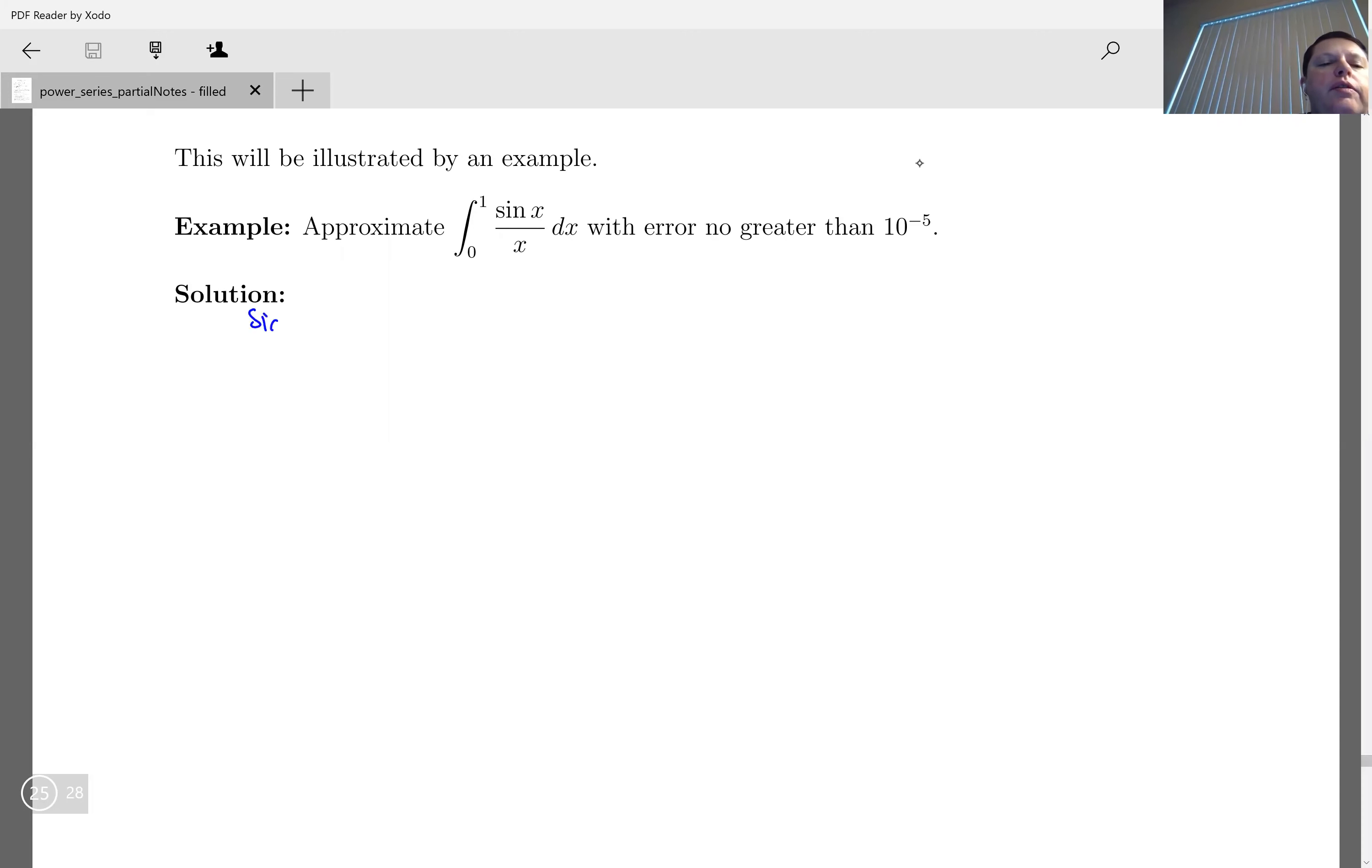So the first thing we know is that sine of x over x is 1 over x times the Taylor series, and we're going to use the Taylor series centered at zero. So x minus x cubed over 3 factorial plus x to the fifth over 5 factorial, negative 1 to the n x to the 2n plus 1 over 2n plus 1 factorial, and so on.